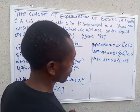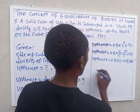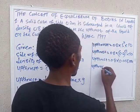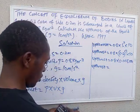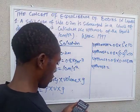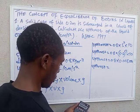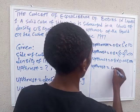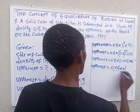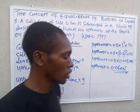So the upthrust is equal to 0.8 times 0.008 times 10, which gives us 0.064 Newtons. That is the solution to this question.